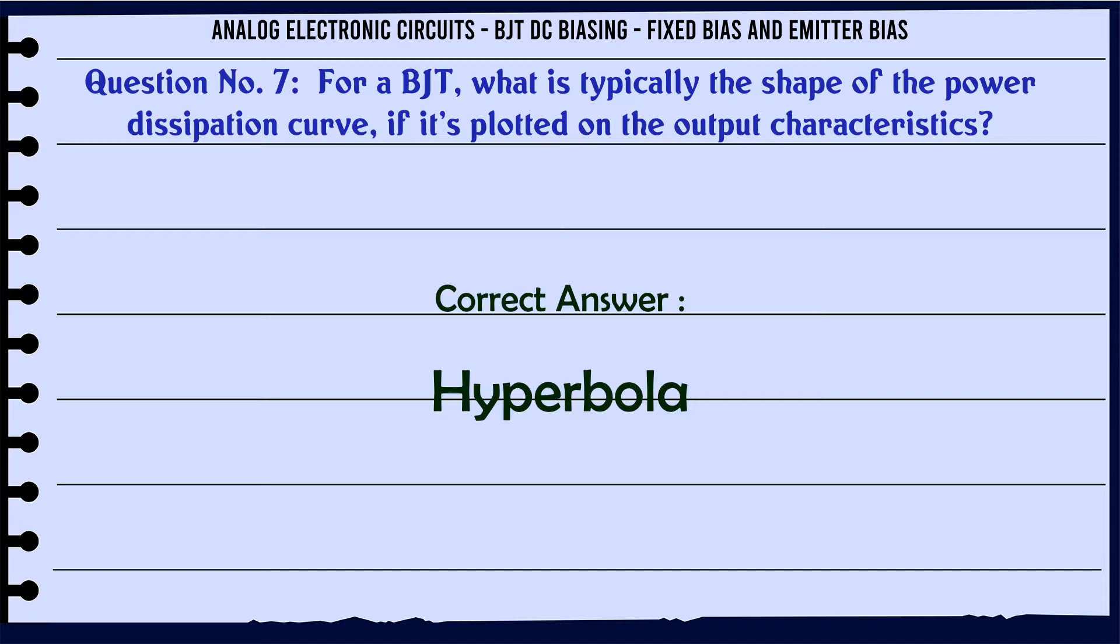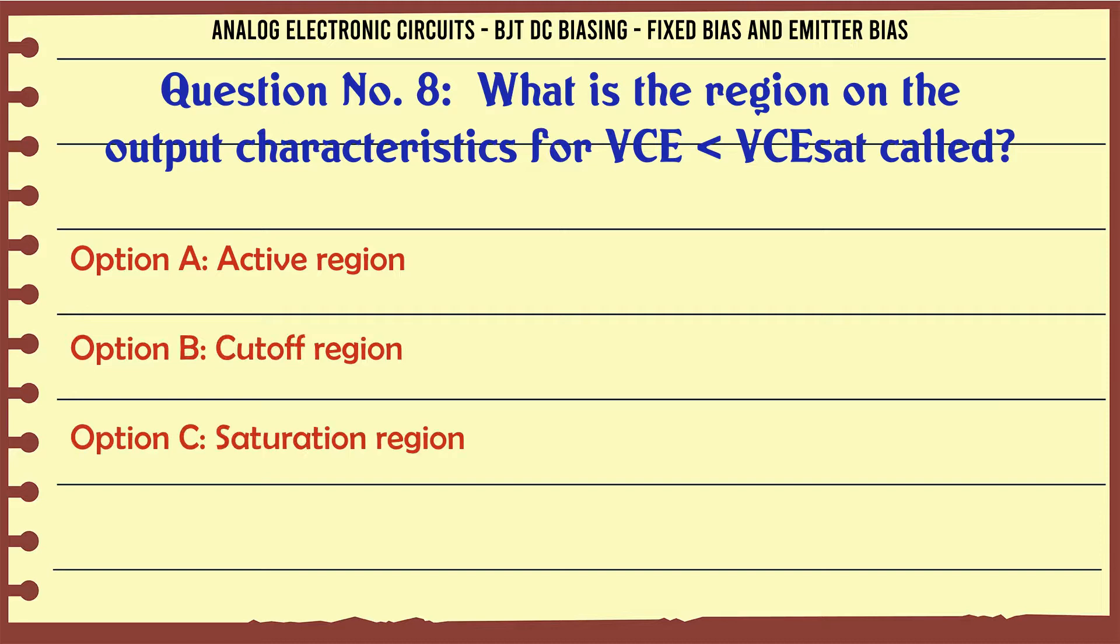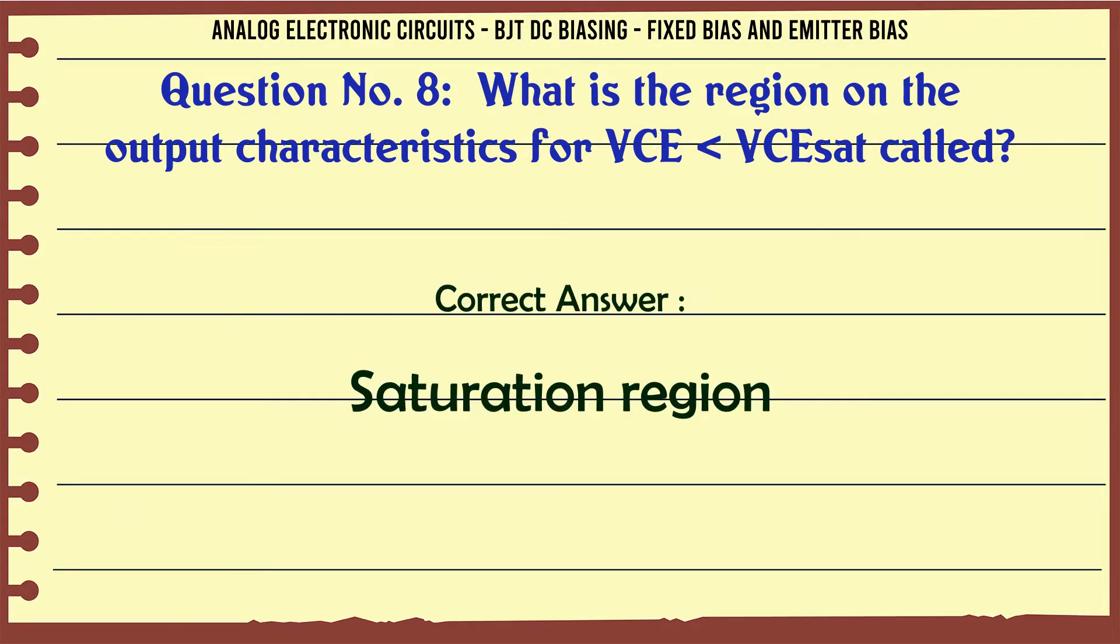What is the region on the output characteristics for VCE < VCEsat called? A: active region. B: cutoff region. C: saturation region. D: active cutoff region. The correct answer is saturation region.